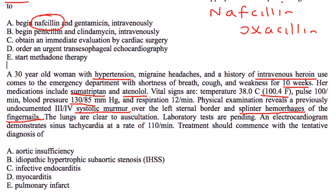Treatment should commence with the tentative diagnosis of what? This question is pretty straightforward — it's asking you what you think this patient has. There are a lot of clues: IV drug use, a bit of a fever, splinter hemorrhages, and a new murmur. Murmurs are evident on cardiac auscultation when a person has endocarditis — it's a physical exam finding. So the answer is of course endocarditis.